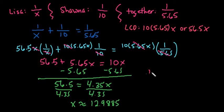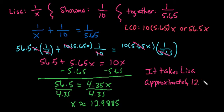And so we end up with X is approximately 12.9885. And since it says to round to two places, we could say that it takes Lisa approximately 12.99 minutes.